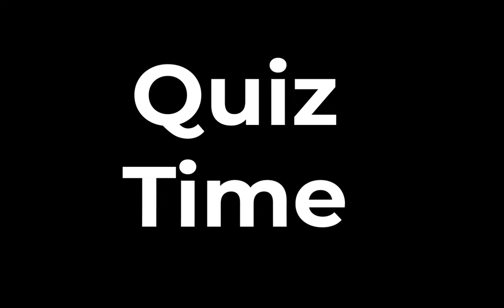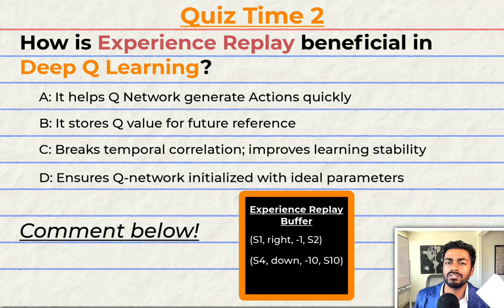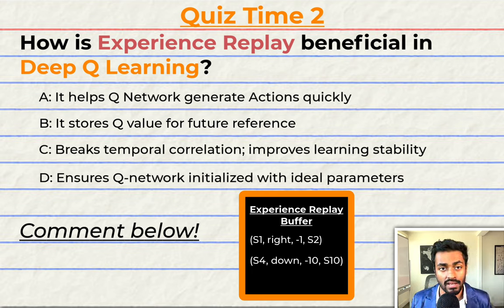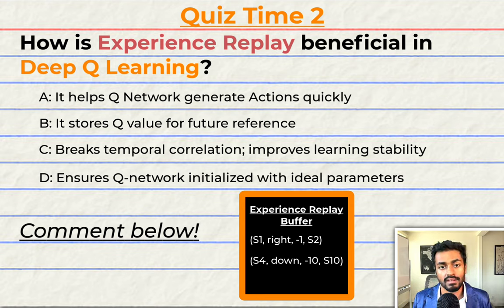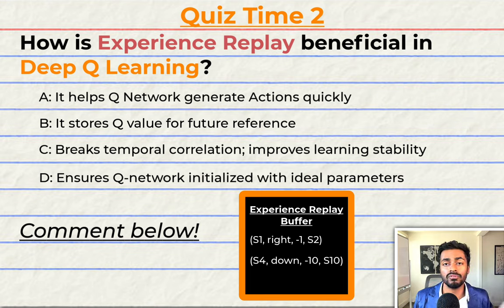Quiz time! Have you been paying attention? Why is experience replay considered beneficial in deep Q-learning? A: it helps the Q-network generate actions more quickly. B: it stores the Q-values for future reference. C: it breaks the temporal correlation and improves learning stability. Or D: it ensures that the Q-network is always initialized with the ideal parameters. Comment your answer down below and let's have a discussion.